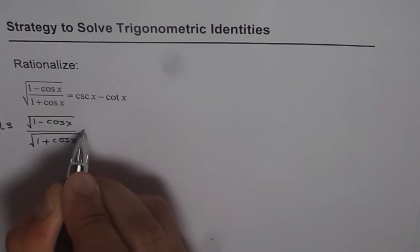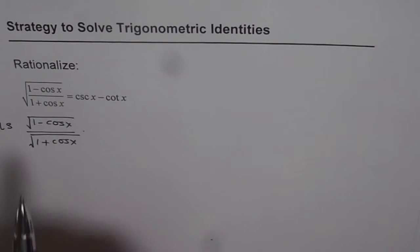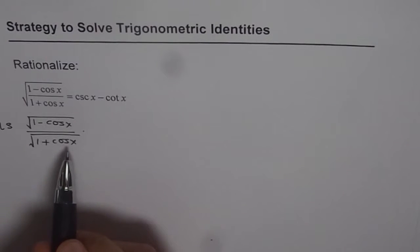Now rationalization means multiplying and dividing by the conjugate. The conjugate means if it is 1 plus cos x, multiply and divide by 1 minus cos x.